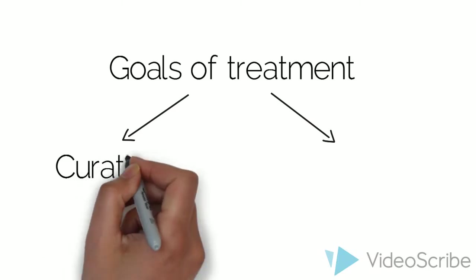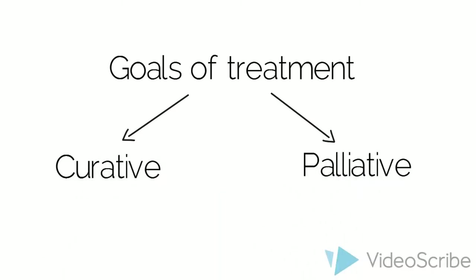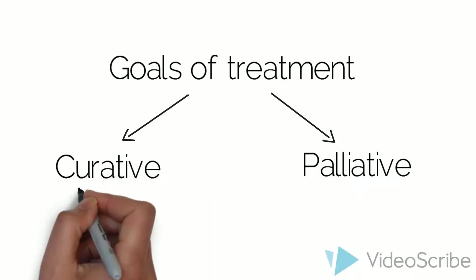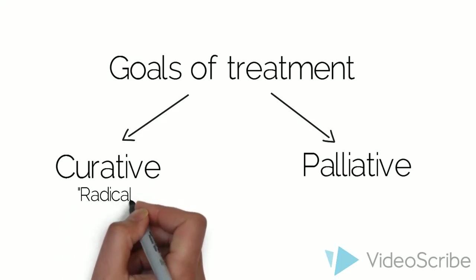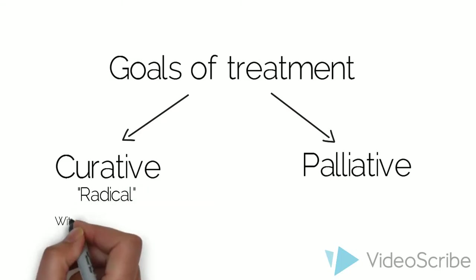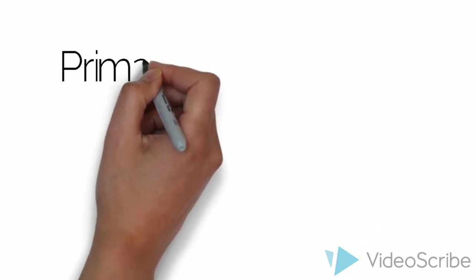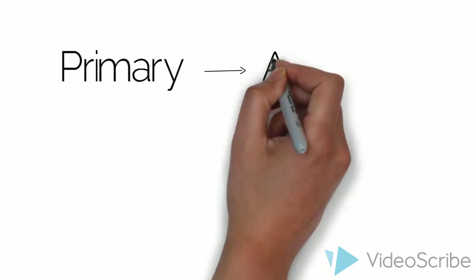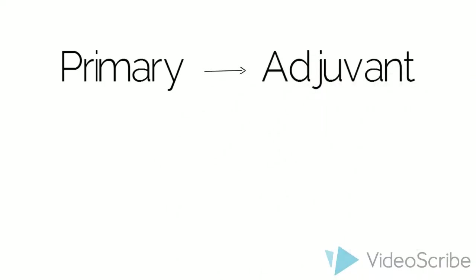The treatment of cancer has one of two goals: curative or palliative. Curative treatments are also termed radical and include any treatment for cure. With respect to curative treatments, a treatment may be the primary treatment, or a treatment may be adjuvant, that is a treatment in addition to a primary treatment.